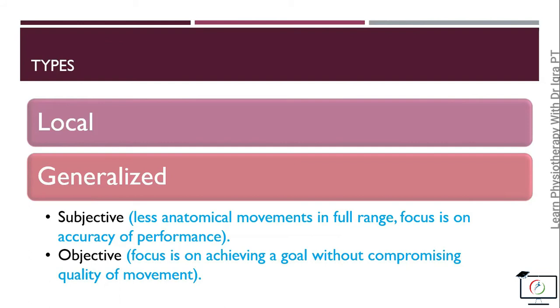In the objective generalized free exercises, a goal is formed and the focus is on achieving that goal, but there should be no compromise on the quality and accuracy of the movement. For example, to touch a point on the wall while standing, stretching your hand without compromising the body posture.